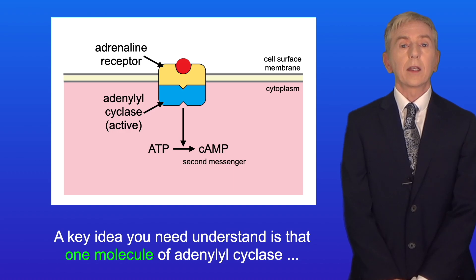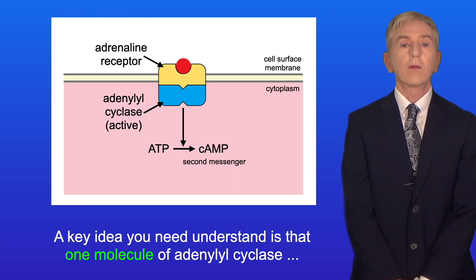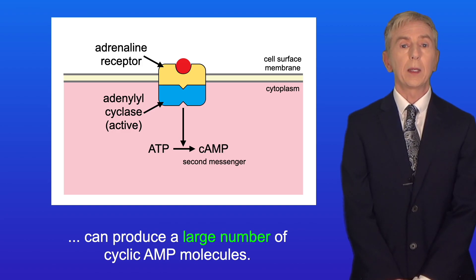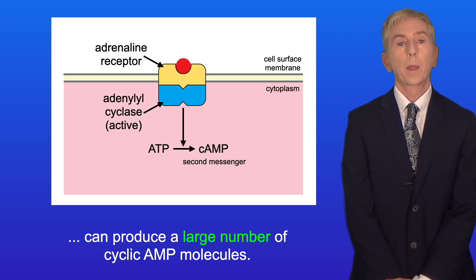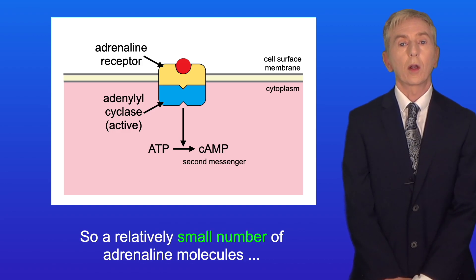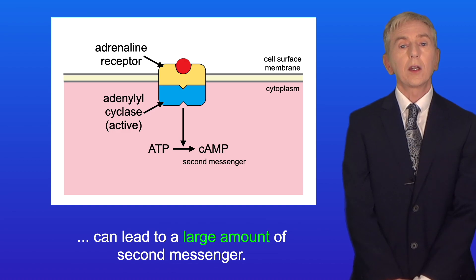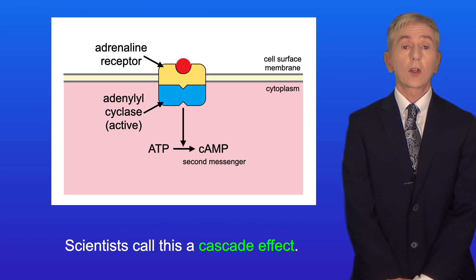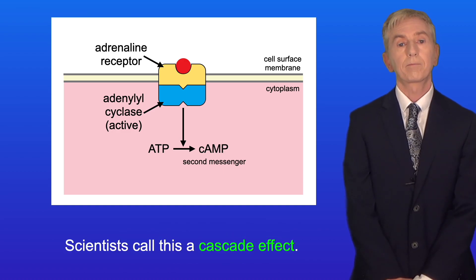A key idea you need to understand is that one molecule of adenylyl cyclase can produce a large number of cyclic AMP molecules. So a relatively small number of adrenaline molecules can lead to a large amount of second messenger. Scientists call this a cascade effect.